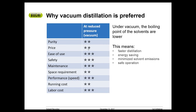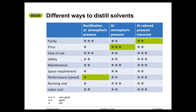The last process is the vacuum reduced pressure process, which is what we use here at Buki using our rotary evaporator. As you can see in the chart, the purity, the price, and the ease of use are all way better compared to the other two options. It's also important to notice that all three processes have very different sample sizes — rectification requires very large amounts of solvent, atmospheric is very small at around 500 milliliters, and reduced pressure is where our instruments come in.